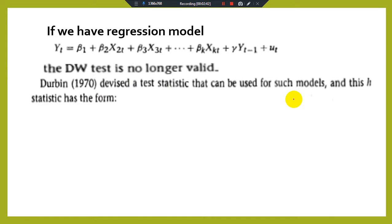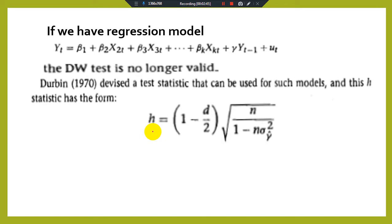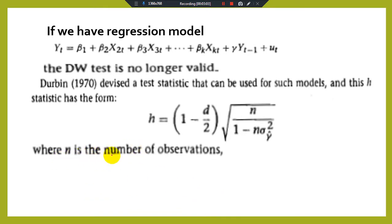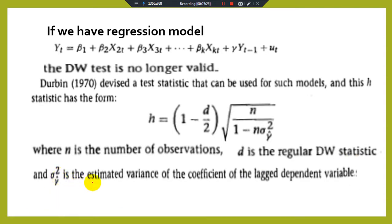The formula for the H statistic is: H equals (1 minus D over 2) multiplied by the square root of N divided by (1 minus N times the variance of the lagged dependent variable coefficient). Here, N is the number of observations, and D is the regular Durbin-Watson statistic calculated using Durbin-Watson methodology. The variance is the estimated variance of the coefficient of the lagged dependent variable.